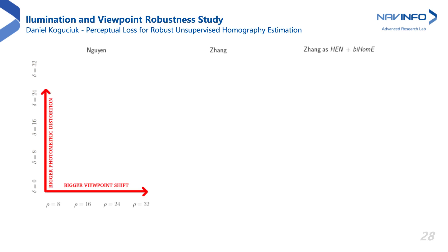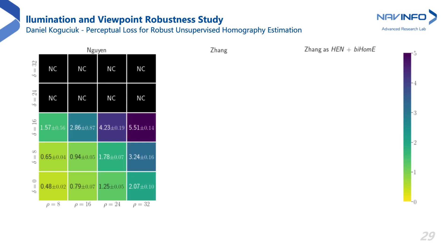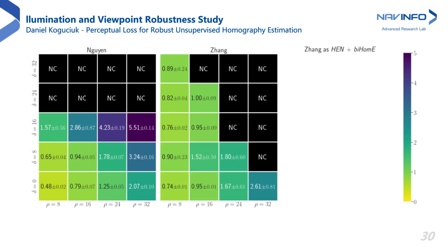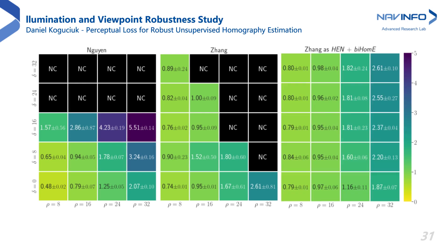We can use the S-COCO dataset and simulate different conditions by two parameters: viewpoint change rho and illumination change delta. Viewpoint change rho defines the maximum range of corner perturbation, and illumination change delta describes how strong photometric distortion will be applied to the image. The bigger rho, the more viewpoint change, and the bigger delta, the more illumination change between input images. The method of Nguyen, based on photometric loss, is robust to big viewpoint changes, but is not able to produce any reasonable model for big illumination distortion. On the other hand, Zhang's method is highly robust to illumination change, but only for small viewpoint change. Our pi-HOMI is robust both to big illumination and viewpoint changes at the same time.